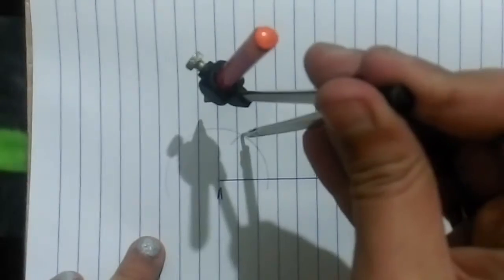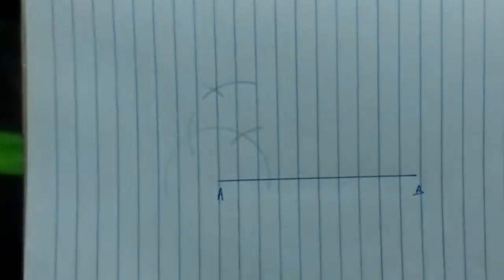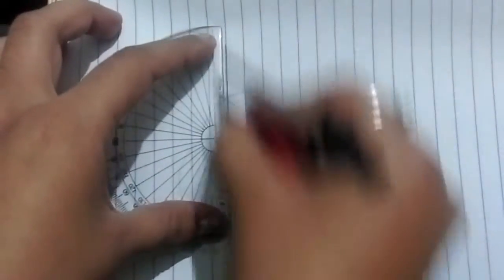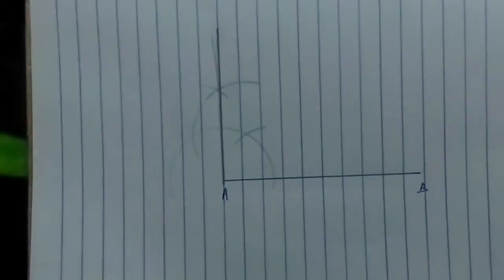Then another arc, bisecting these two arcs, we have obtained an angle of 90 degrees. This is 90 degrees.